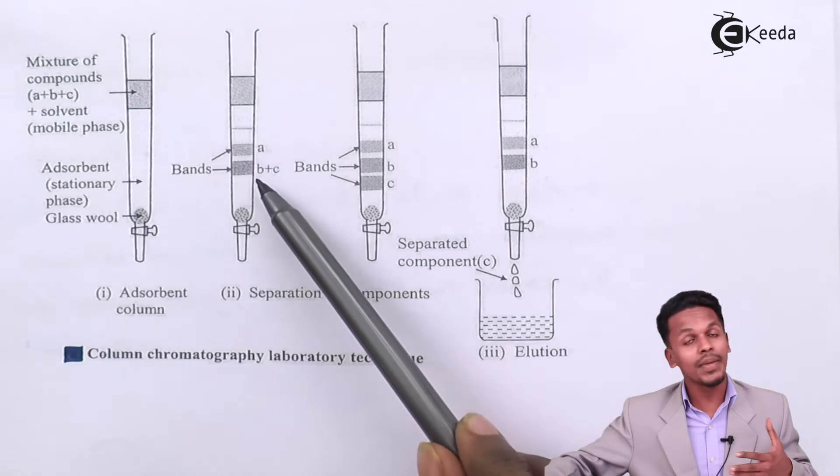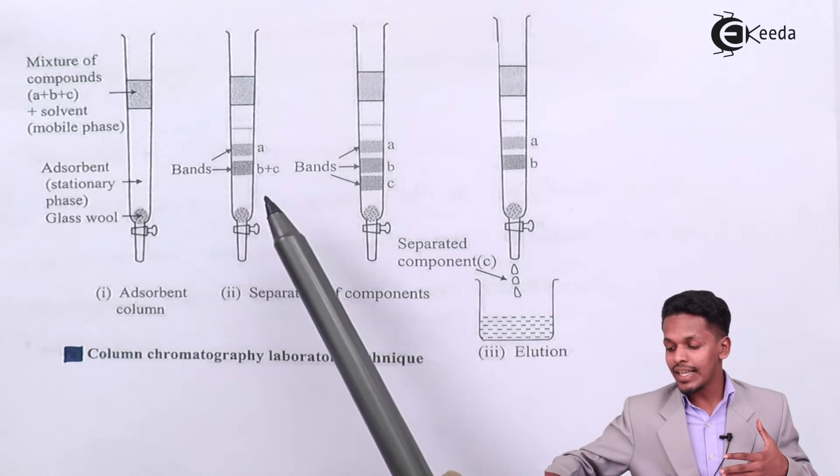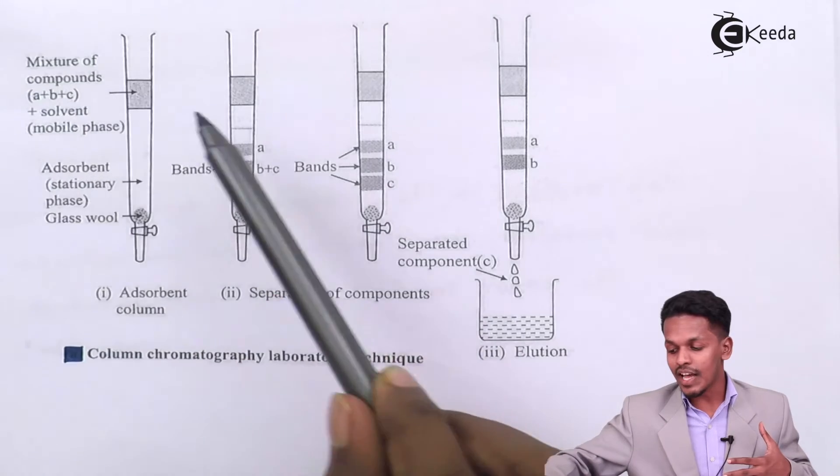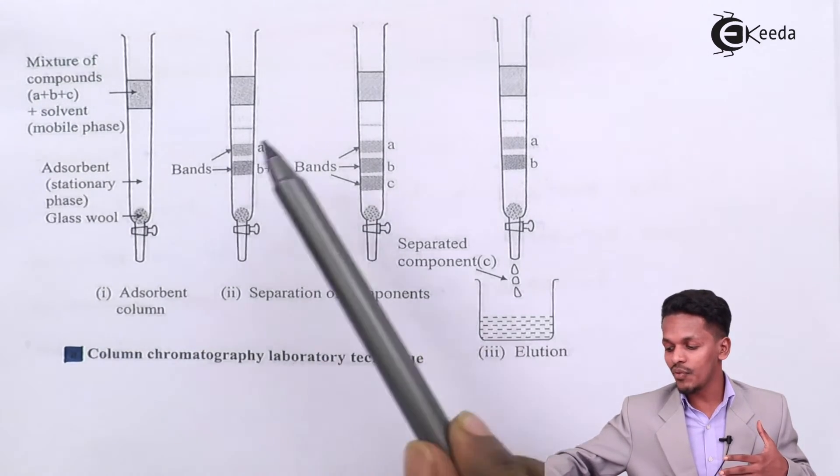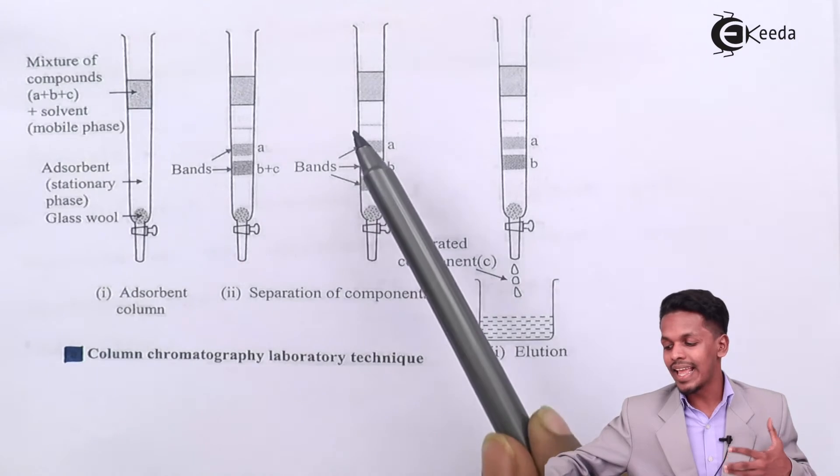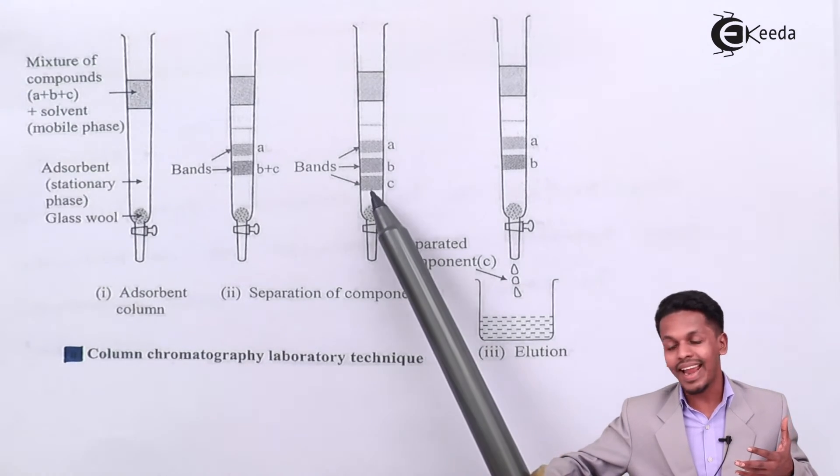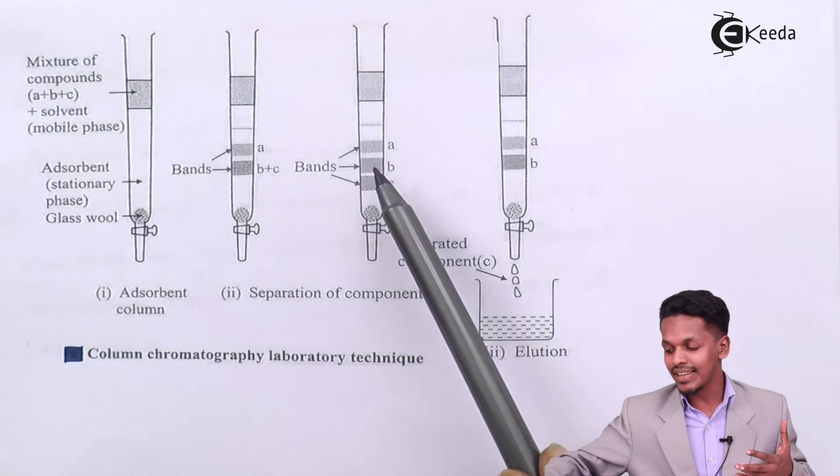So in this case, this is band A and this is band B plus C, and this is what those mixtures are basically separating. So this is A, this is B, and after a few while there will be a separation of components and we could get A plus B and C as you could see over here.